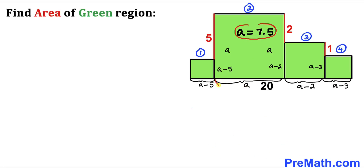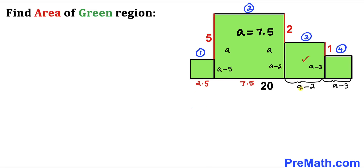So a equals 7.5. That means box two's side length is 7.5. For box one: 7.5 minus 5 gives 2.5. For box three: 7.5 minus 2 gives 5.5. And for box four: 7.5 minus 3 gives 4.5.